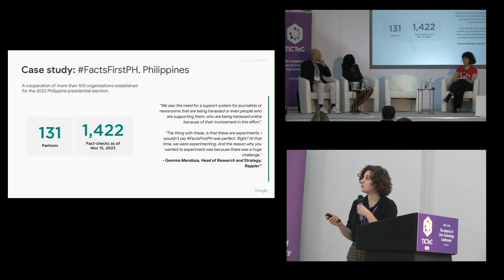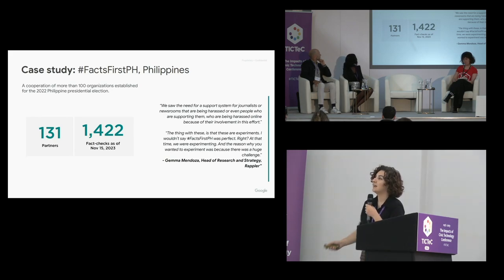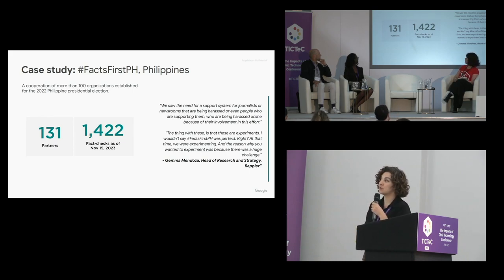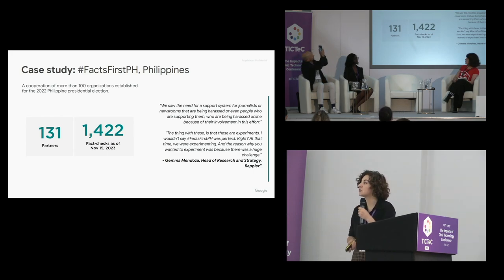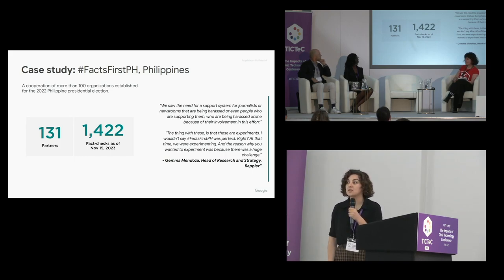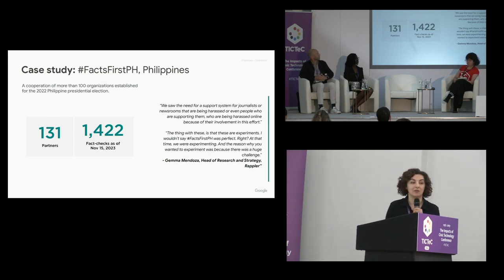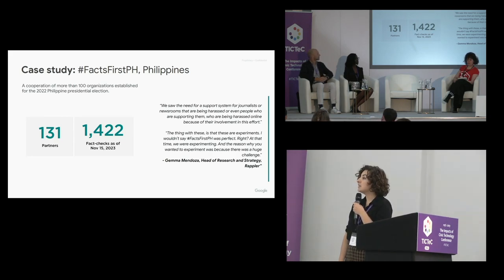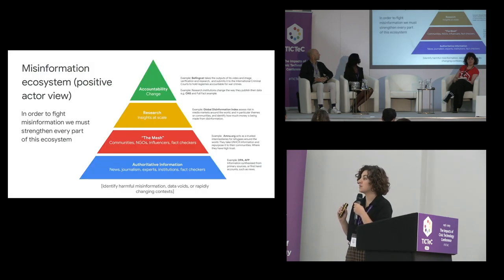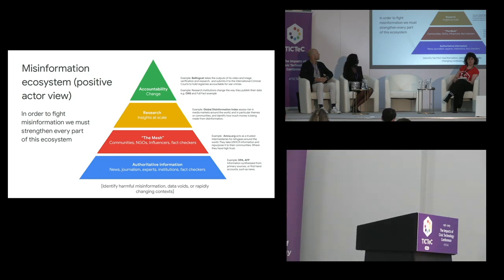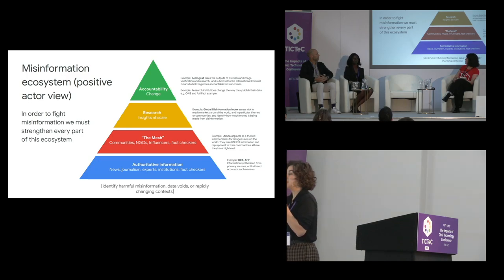I'm going to change the order and talk about this case study first. Facts First PH was a cooperation of more than 100 organisations — 131 to be exact — in the 2022 Philippine presidential election. There were 1,422 fact checks released as of November 2023, which is a substantial number. The really interesting thing they did was introduce this idea of the many different positive actors in the space when thinking about an election, rather than just putting out authoritative information and hoping for the best.